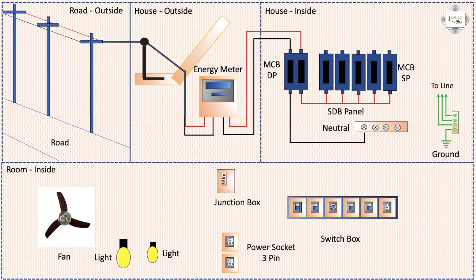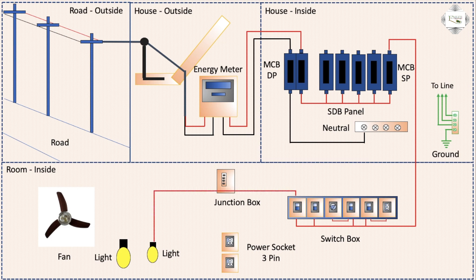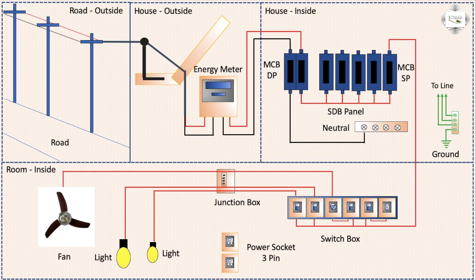Power socket 3 pin or SP outgoing to switchboard connection parallel connection. Phase line input or switch outgoing to dimmer connection, switch outgoing to socket connection, light connection, phase line second light connection, dimmer outgoing to electric fan.